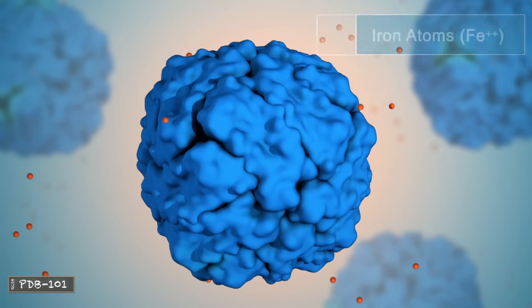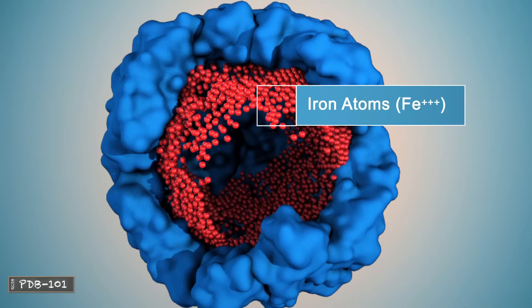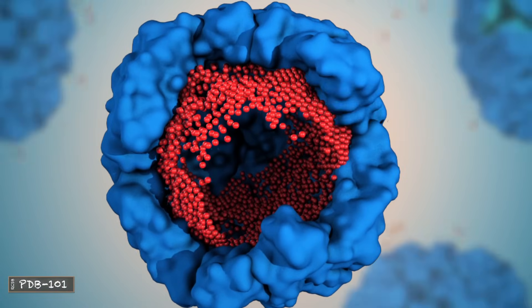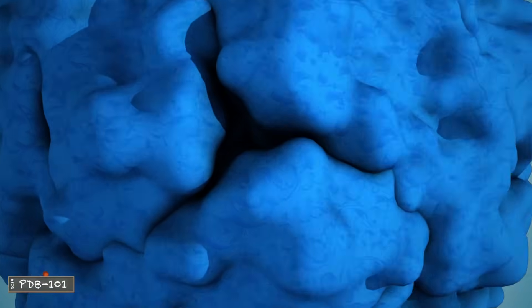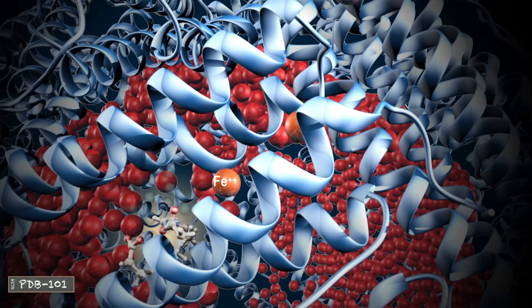Ferritin is a spherical protein with channels that allow iron atoms to enter and exit depending upon an organism's needs. On the inside, ferritin forms a hollow space with iron atoms attached to the inner wall. Ferritin stores iron in a non-toxic form.